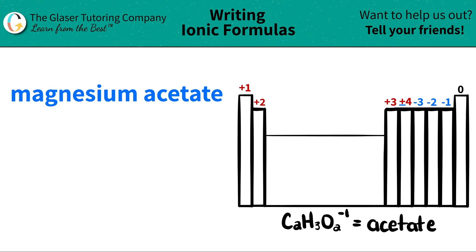Today we are going to be writing the formula for the ionic compound magnesium acetate. The first thing I do is scan the periodic table — magnesium is right here in group two. It's represented as Mg, and all group two elements are alkaline earth metals. They always have an oxidation state or charge of plus two.